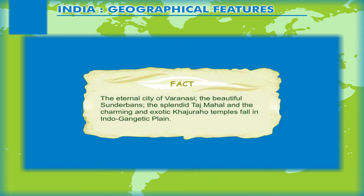The eternal city of Varanasi, the beautiful Sundarbans, the splendid Taj Mahal, and the charming Khajuraho temples all fall within the Indo-Gangetic plain.